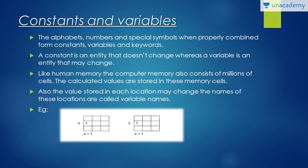The alphabets, numbers, and special symbols when properly combined form constants, variables, and keywords. The alphabets, numbers, and special symbols were discussed in our previous video. A constant is an entity that doesn't change, whereas a variable is an entity that may change.